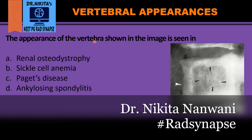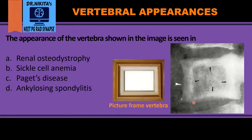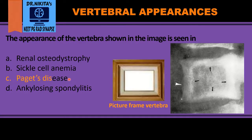We have to identify the appearance of the vertebra in this image. The appearance here is that of a picture frame vertebra, because we see cortical thickening all around the vertebra, which forms the picture frame, with the central area like a photograph within it. Cortical thickening is a feature of Paget's disease, which is why we see this picture frame vertebra in Paget's disease.